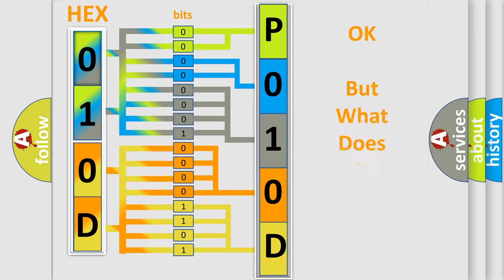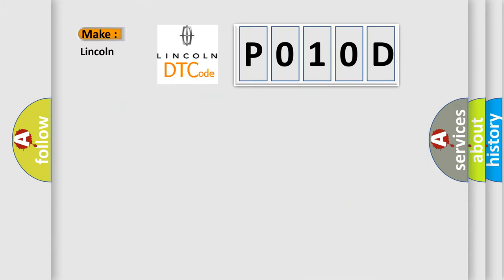The number itself does not make sense to us if we cannot assign information about what it actually expresses. So, what does the Diagnostic Trouble Code P010D interpret specifically for Lincoln car manufacturers?